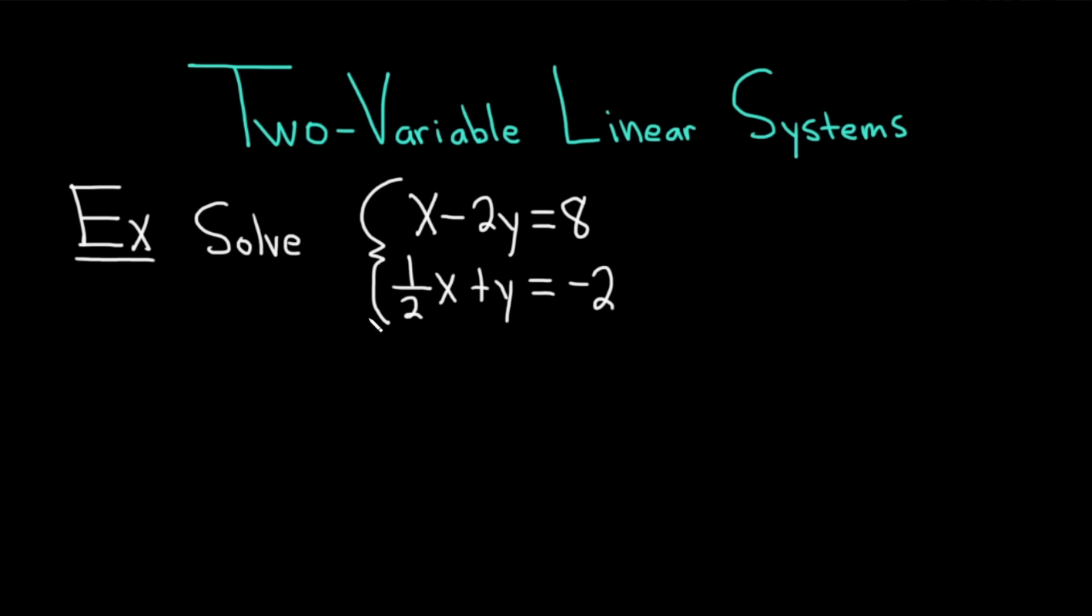In this video, we're going to discuss two variable linear systems. We're going to start by solving a system of equations. We have two equations with two variables, called unknowns. The equations are x minus 2y equals 8, and one-half x plus y equals negative 2. Let's work through this solution.